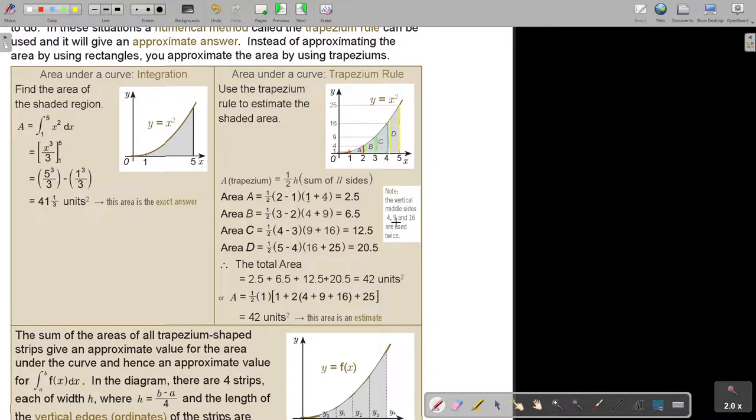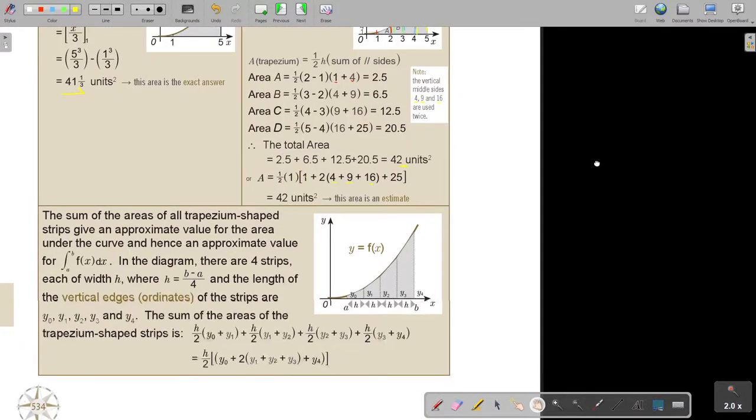Note the vertical middle sides 4, 9, and 16 are used twice which I indicate with the stripes. The beginning and the end sides are used just once. The total area I just add up. But there's a rule and the rule is half of one times the first side once, the middle sides twice, and the last side once. I get 42 but the correct answer is 41 and a third, so it's approximately the same answer.